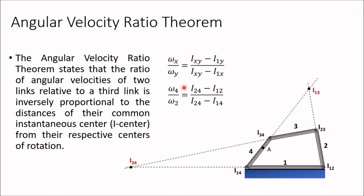To determine the magnitude of ω4, use this ratio. For direction, examine the common instantaneous center I24, and check whether I12 and I14 are on the same side or opposite sides of I24. If I14 and I12 are both on the same side of I24, then link 4 and link 2 rotate in the same direction. If they are on opposite sides, the directions of rotation are opposite to each other.